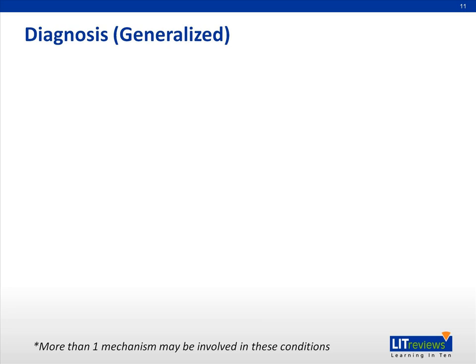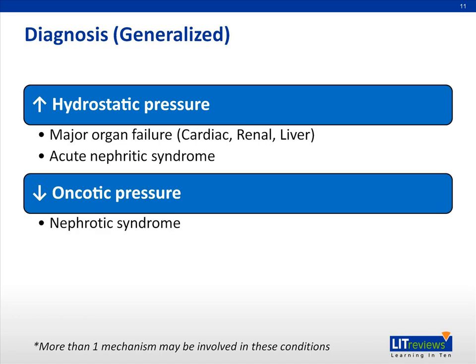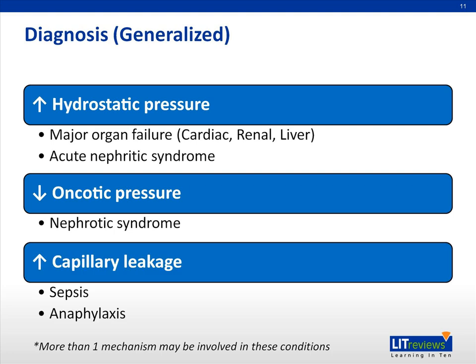Causes of generalized edema can be grossly categorized by the main mechanism of pathophysiology. However, as mentioned earlier, multiple mechanisms are often involved in these conditions. Edema primarily caused by increased hydrostatic pressure includes major organ failure, such as cardiac, renal, and liver failure, and also in acute nephrotic syndrome. In nephrotic syndrome, generalized edema is mainly caused by decreased oncotic pressure from renal loss of protein. Increased capillary leakage can also cause edema in conditions such as sepsis and anaphylaxis.